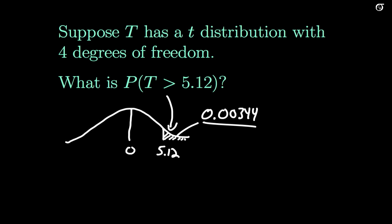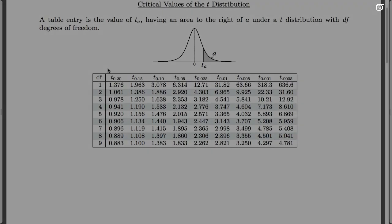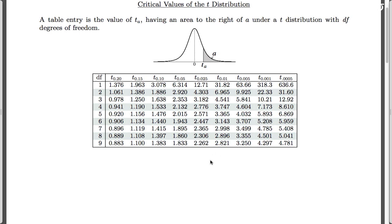Now we don't always have access to a computer, so we might need to use a statistical table. The t-table is not going to get us an exact answer, it's going to get us a range of values. So here we have our t-table, and we want 5.12 and four degrees of freedom.